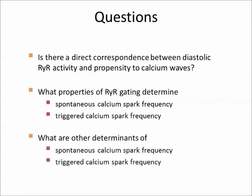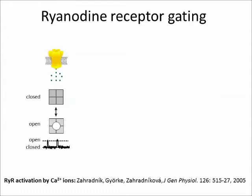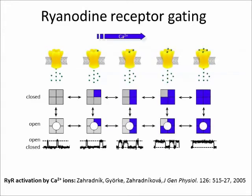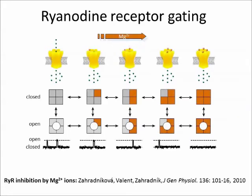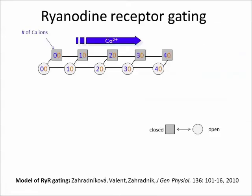Previously we have found that the ryanodine receptor is activated by calcium ions in an allosteric manner. That is, the open probability of a calcium-free ryanodine receptor molecule is very small, and binding of calcium to each of the four activation sites of the channel increases its open probability. Magnesium can also bind to the activation sites, but it does not activate the channel. Rather, it allosterically inhibits ryanodine receptor opening.